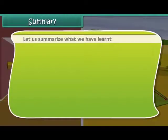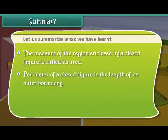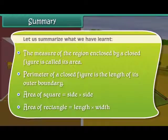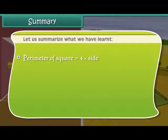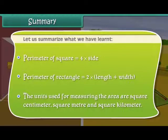Let us summarize what we have learned. The measure of the region enclosed by a closed figure is called its area. The perimeter of a closed figure is the length of its outer boundary. Area of a square equals side × side; area of a rectangle equals length × width. Perimeter of a square equals 4 × side; perimeter of a rectangle equals 2 × (length + width). The units used for measuring area are square centimeter, square meter, and square kilometer.